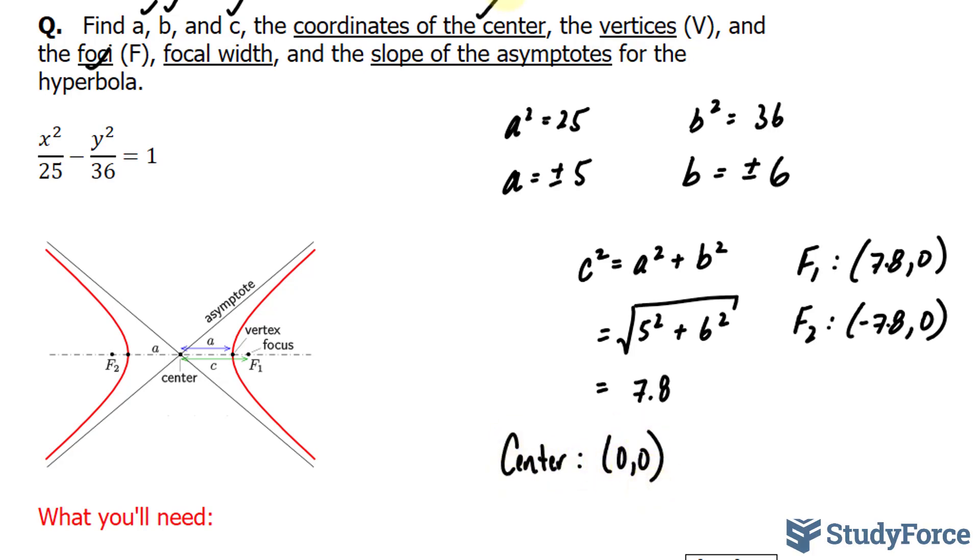The coordinates of the vertices, on the other hand, are related to a. Notice that a is the distance from the center to the vertex. So the vertices here, v1, we'll call this one v1, has the coordinates 5 and 0. And v2 has the coordinates negative 5 and 0. I'll check that off.